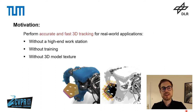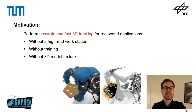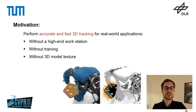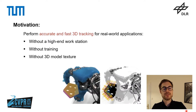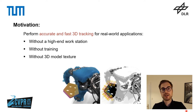The main motivation behind our approach is to perform accurate and fast 3D tracking for real-world applications. This means that we want to estimate both the rotation and translation of an object relative to the camera from consecutive RGB images as well as a 3D model of our object. A key aspect of our work is usability — we want to perform tracking without requiring any high-end hardware, without requiring training or training data, and without requiring model texture.